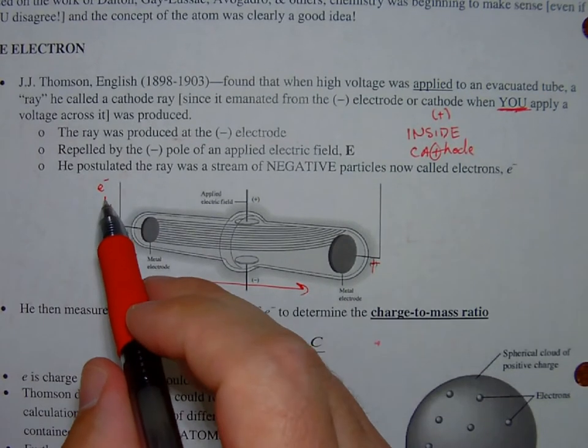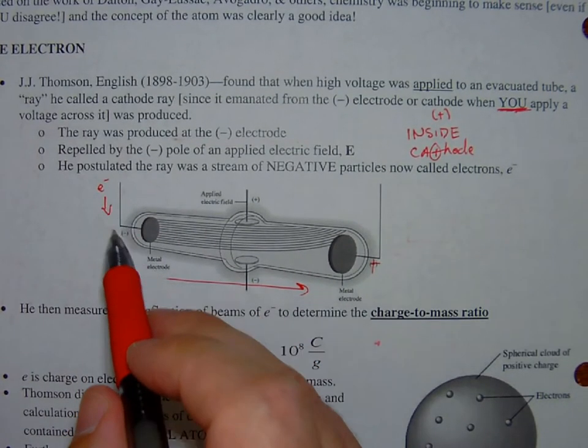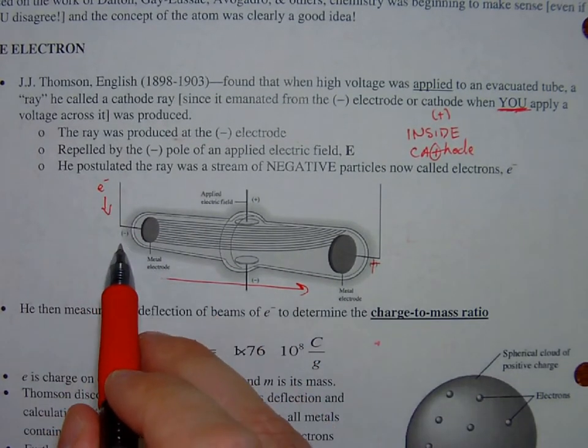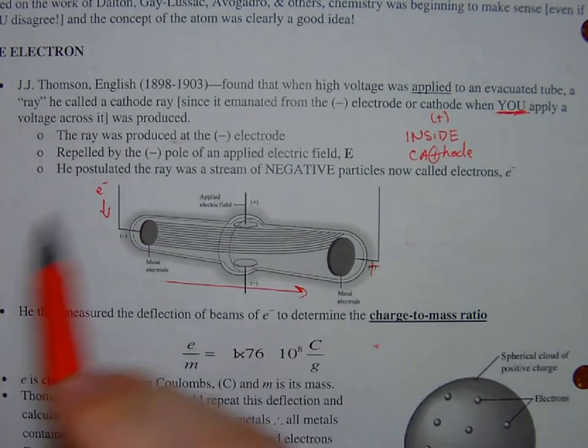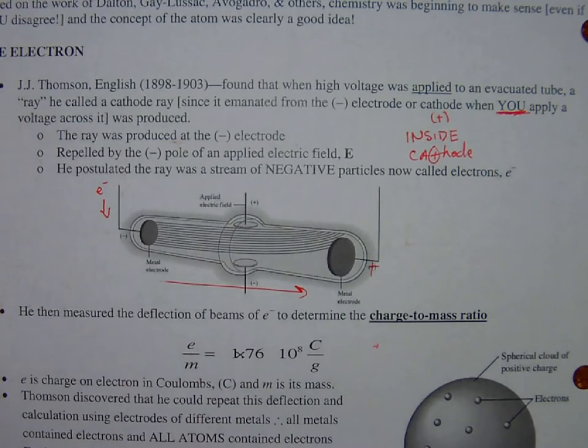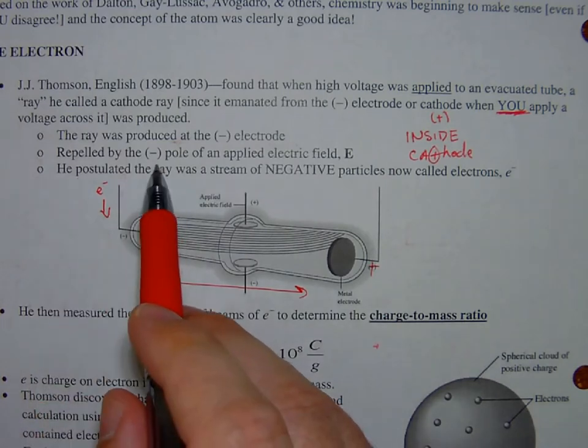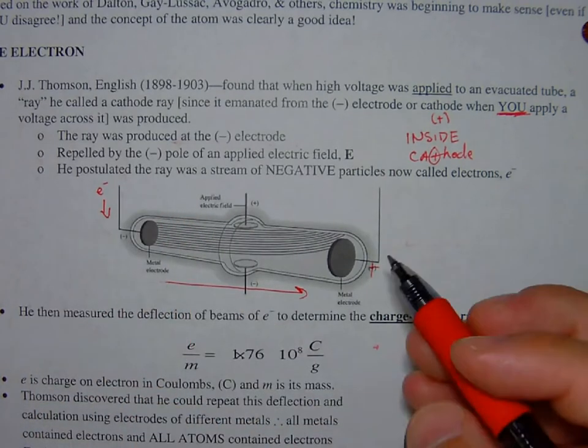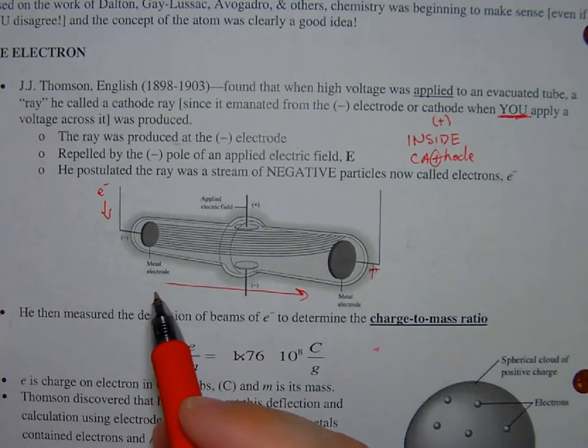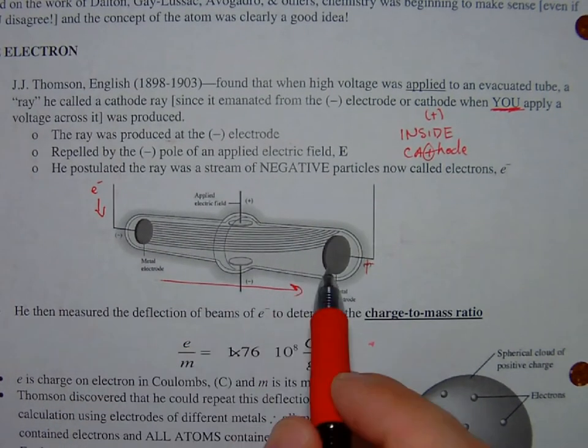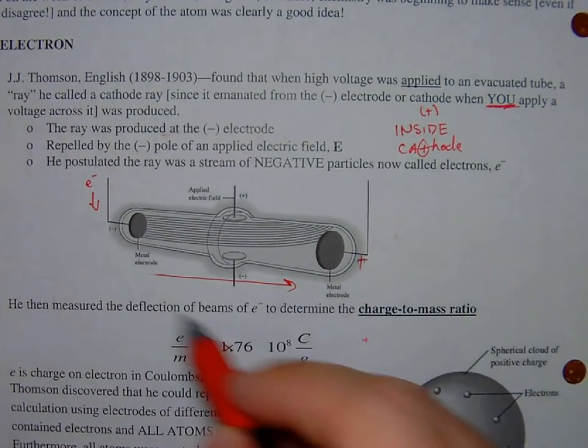Obviously that's the way that an electron would move, from the negative to the positive, because negatives and positives attract. So now the ray was produced at the negative end. It was repelled by a negative pole of an applied electrical field. When we add essentially magnets, this top one being the positive field, the bottom one being the negative field, there's a deflection.